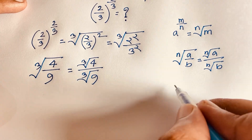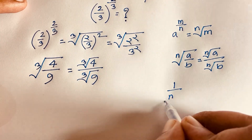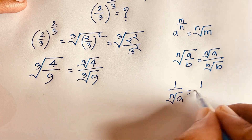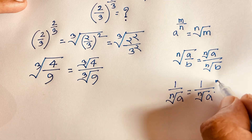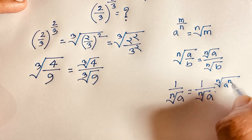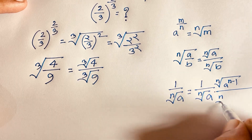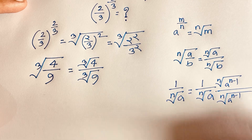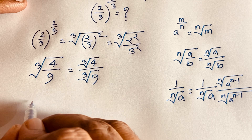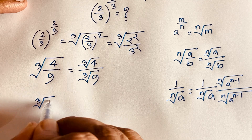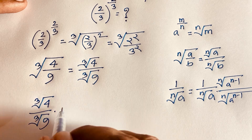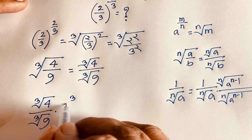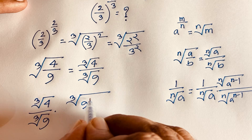To rationalize, we use the identity: 1 over n-th root of a equals n-th root of a to the power (n minus 1), divided by n-th root of a to the power n. Applying this to cube root of 9.